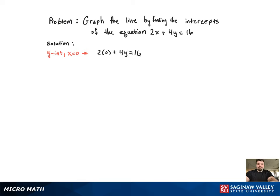We plug x equals 0 in and solve for y. After some algebra, we get y equals 4, and that corresponds to the point 0 comma 4. It's important to realize the ordered pair there.